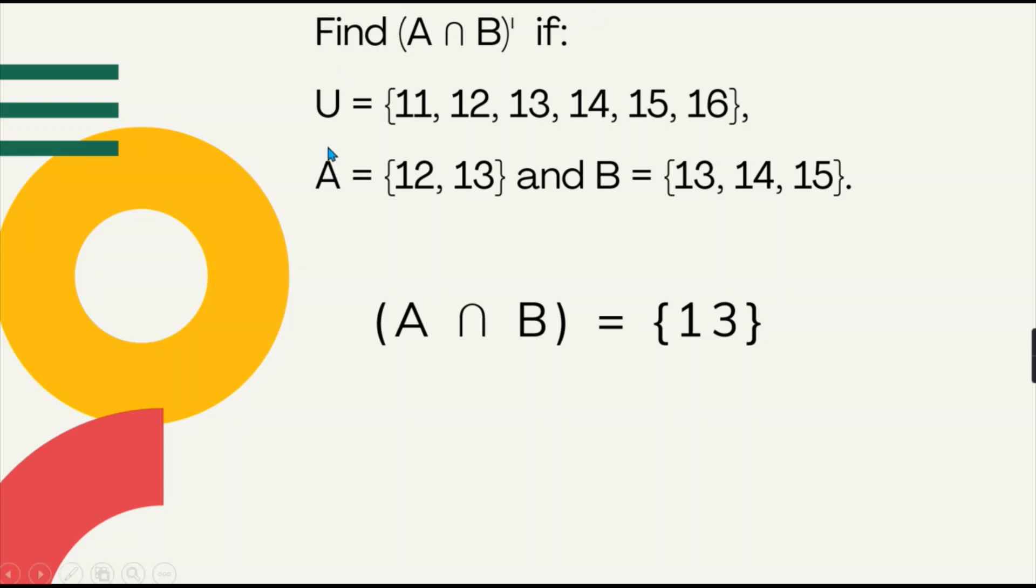In this case, from set A and set B, you only have element 13 as their common. Then to get the A intersection B complement, you only have to eliminate the 13 from our set U, which will leave us with the elements 11, 12, 14, 15, and 16. Now this is the answer for A intersection B complement in this given set.